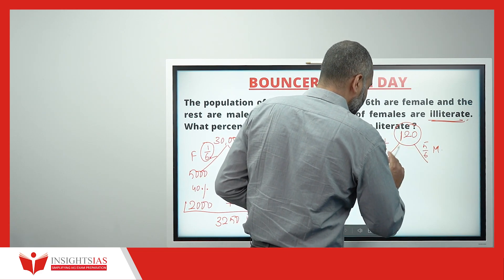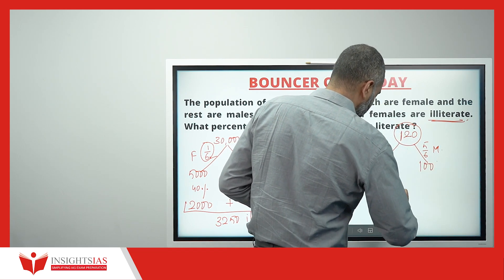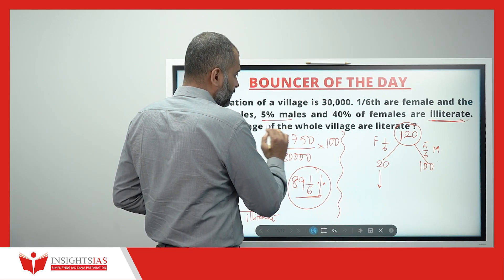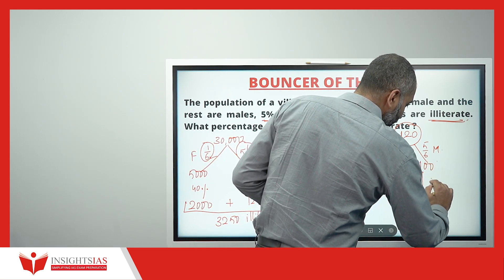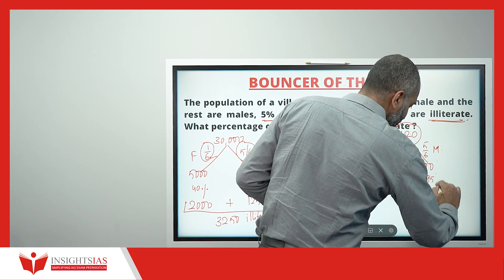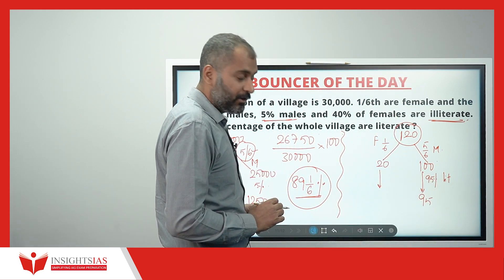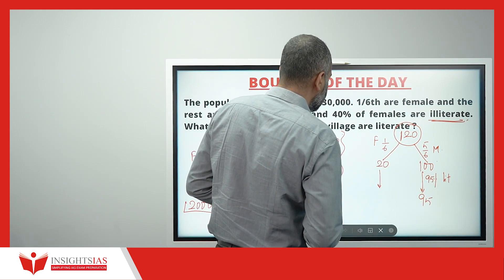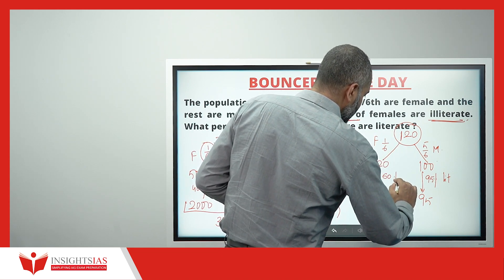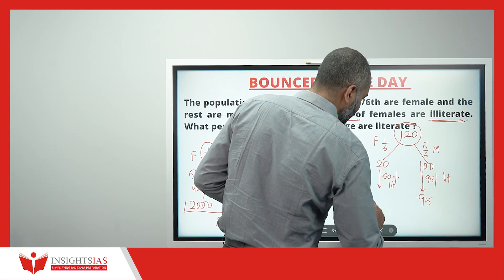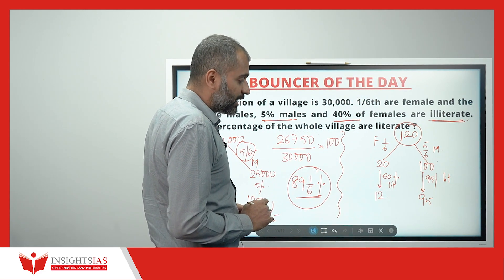Female is 1/6 of 120 = 20, and remaining 100 are male. Out of 100 males, 5% are illiterate, so 95% are literate — that is 95 people. Out of 20 females, 40% are illiterate, so 60% are literate. 60% of 20 is 12 females literate.